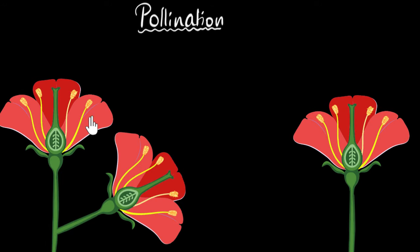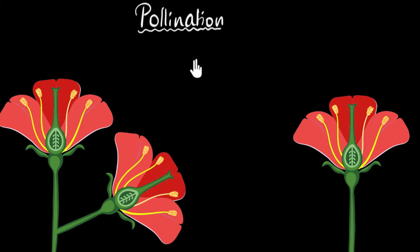Flowers use their beautiful petals and fragrance to attract insects. Why do they do that? Because the insects help them in pollination. So in this video, we're gonna see what pollination is, what are the different types, and how exactly do the insects help.